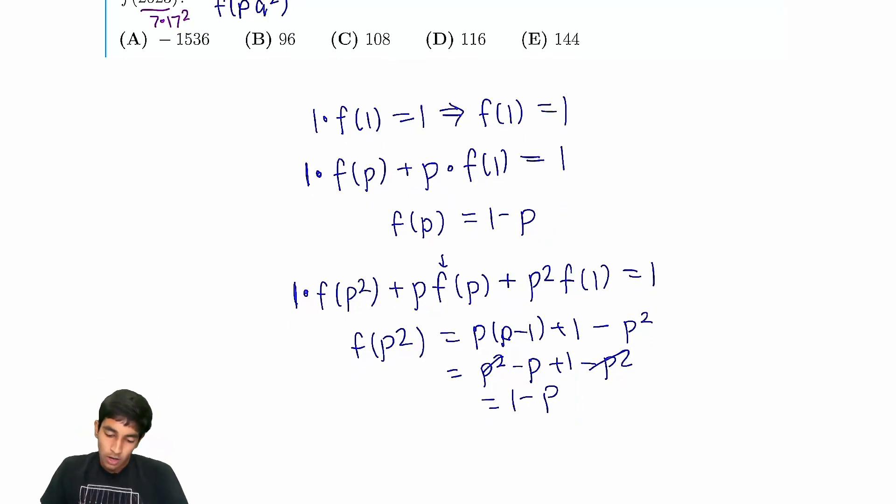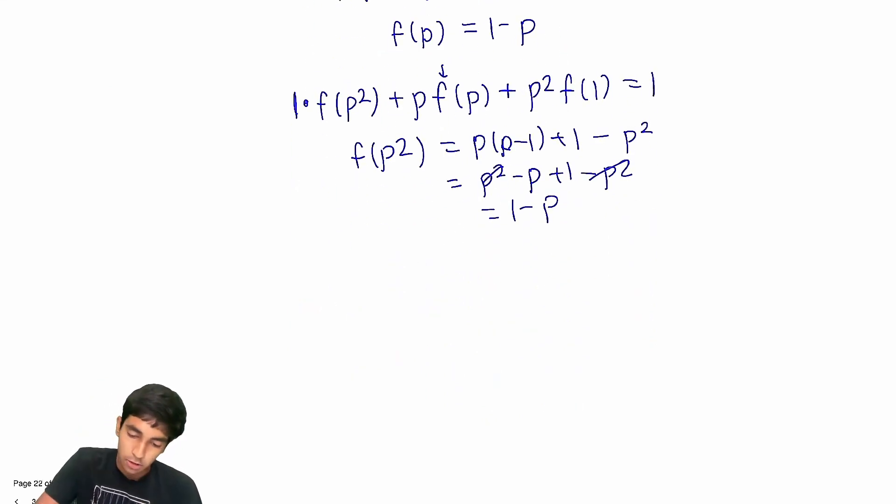So, now, okay, what if the primes are not the same that we're multiplying? What is f of pq? We can say f of pq plus q·f(p) plus p·f(q) plus pq·f(1), which is just pq. This sum is 1.